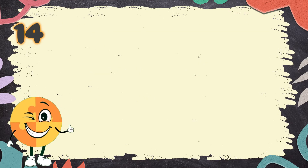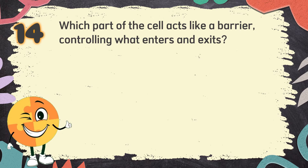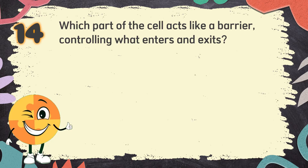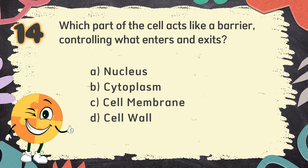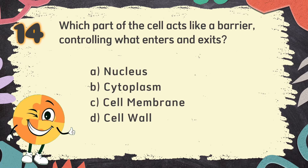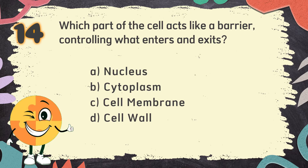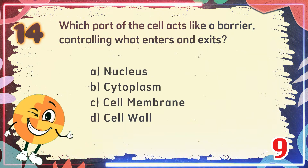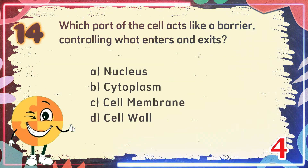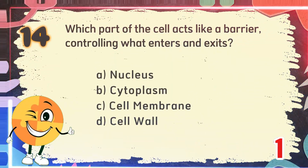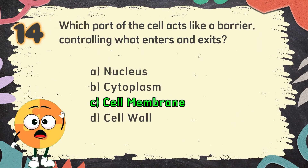Number 14: Which part of the cell acts like a barrier, controlling what enters and exits? The choices are: A. Nucleus, B. Cytoplasm, C. Cell membrane, D. Cell wall. The correct answer is C. Cell membrane.